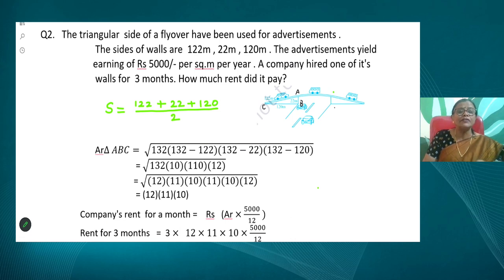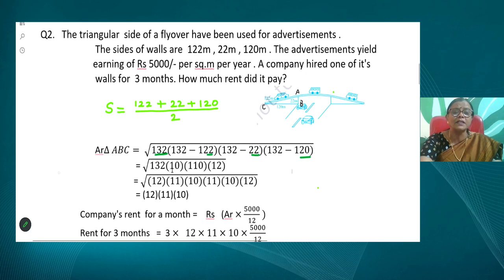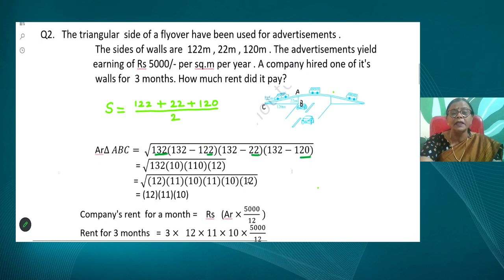First we find s: s = (122 + 22 + 120)/2 = 264/2 = 132. The area = √[132 × (132−122) × (132−22) × (132−120)] = √[132 × 10 × 110 × 12]. Now look for pairs: 132 = 12 × 11; 110 = 11 × 10; combined we get √[12 × 11 × 10 × 11 × 10 × 12]. We find pairs: two 12s make one 12, two 11s make one 11, two 10s make one 10 — giving area = 12 × 11 × 10 = 1320 square meters.